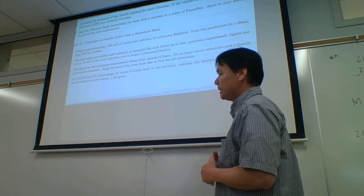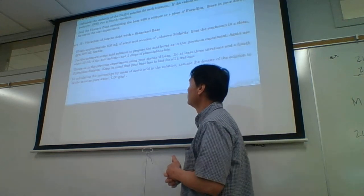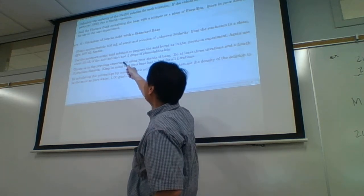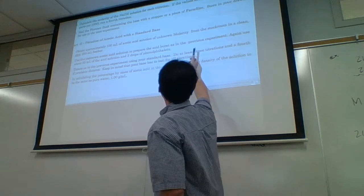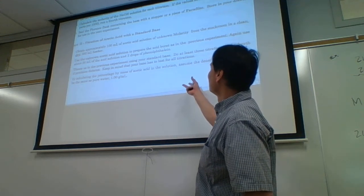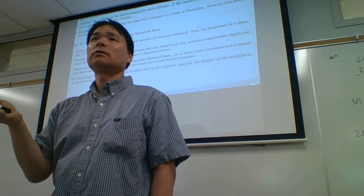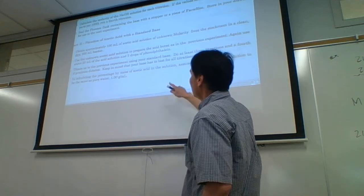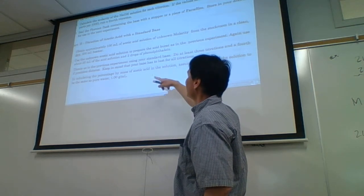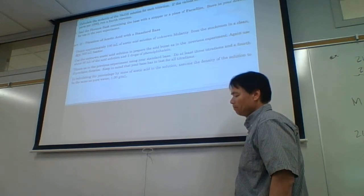In part one we standardized the base and now we know its concentration to four sig figs. We can use that standard base to determine the concentration of the acetic acid to four sig figs. Obtain approximately 100 mL of acetic acid solution of unknown molarity from the stock room in a clean, dry 250 mL beaker. Use the unknown acetic acid to prepare the acid burette — rinse with water, then rinse with acetic acid, remove air bubbles. Then put the acetic acid into an Erlenmeyer flask, add two drops of phenolphthalein, and titrate against the sodium hydroxide.